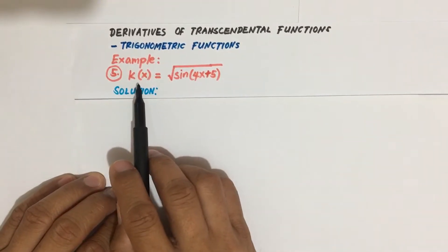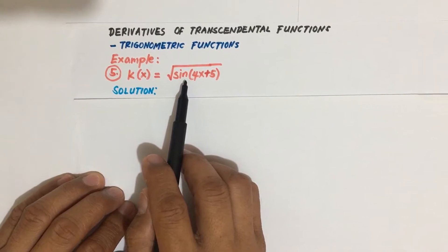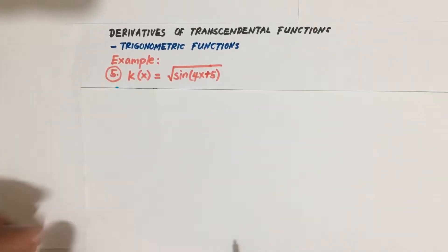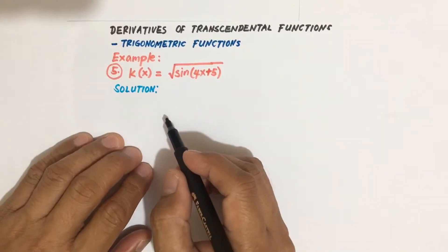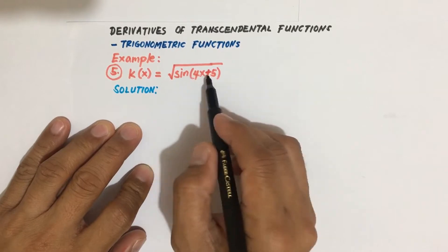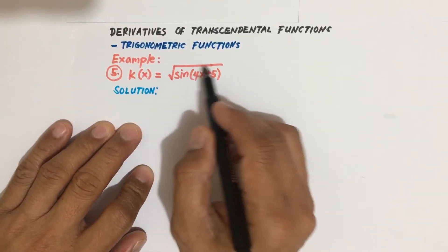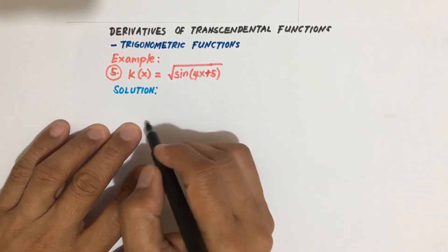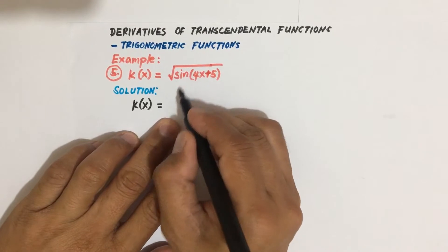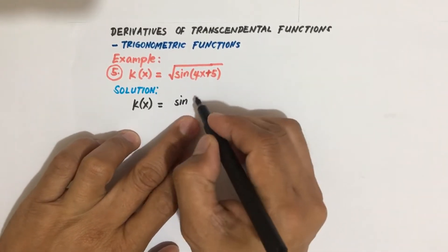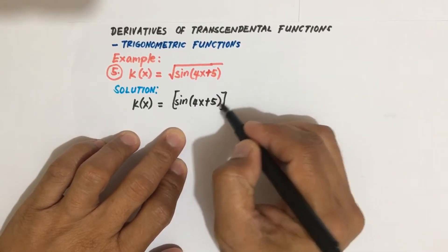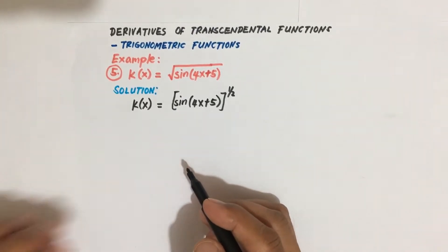We're given the function k(x) equal to the square root of sine of (4x + 5). Our initial step here is to transform this radical into exponential form, so k(x) is equal to sine of (4x + 5) raised to the power one half.